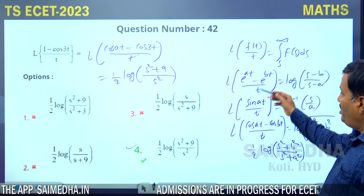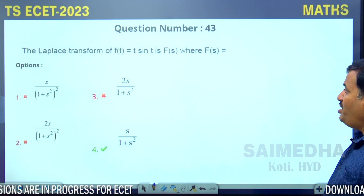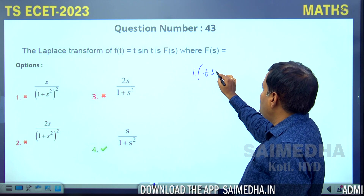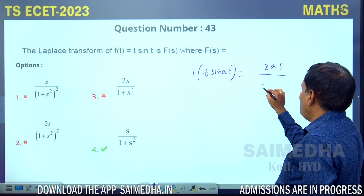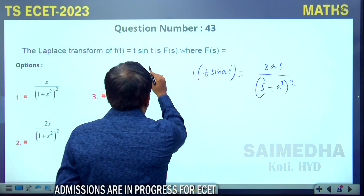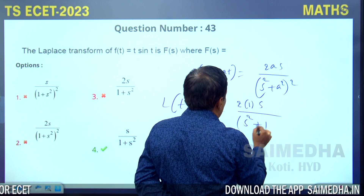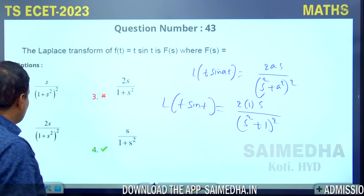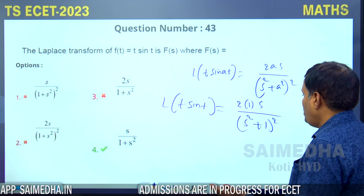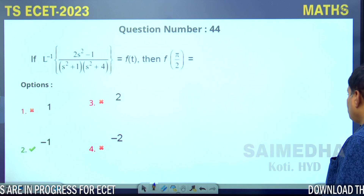For Laplace of t·sint, we use the standard formula: Laplace of t·sin(at) = 2as/(s²+a²)². With a=1, the answer is 2s/(s²+1)². Option 2 is correct — note the given key had an error which is being corrected.